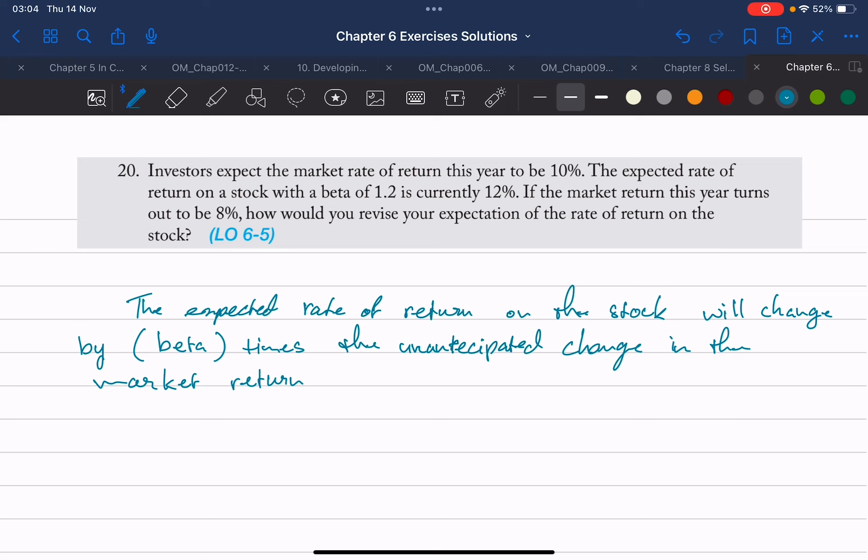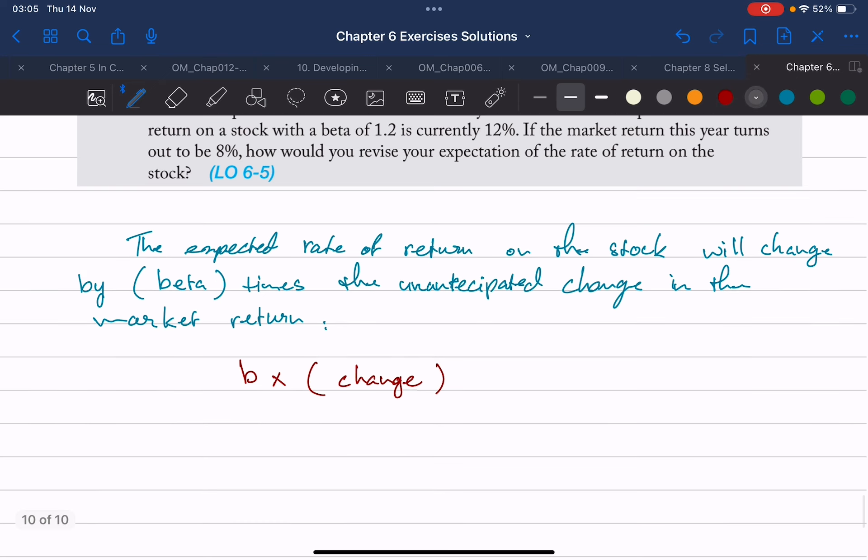So that would be beta multiplied by the change. If I want to simplify it as a simple formula, it would be something like this. So what's beta here? It is 1.2. And what is the change? The change is 0.08 minus 0.10.